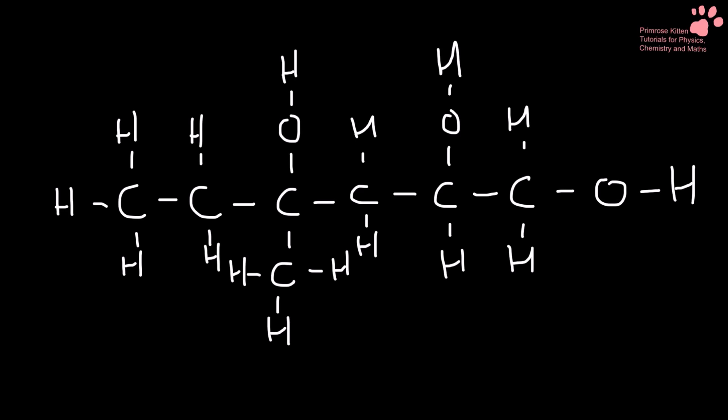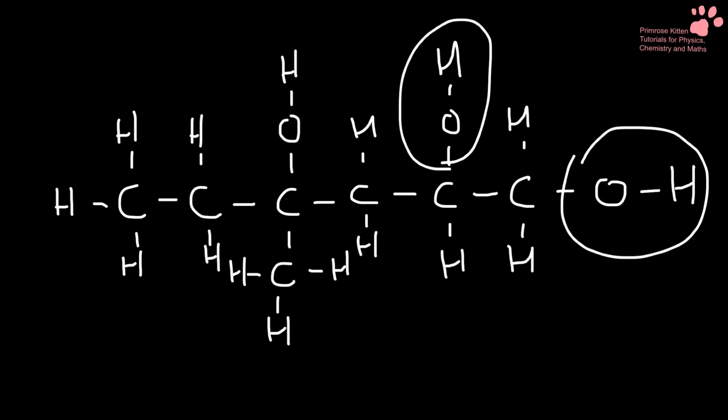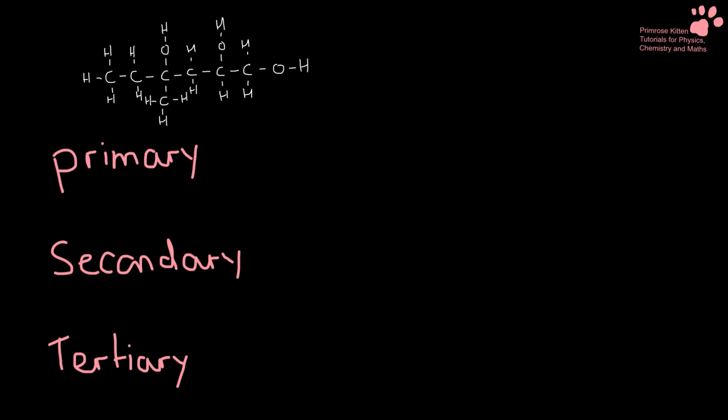Alcohol groups can go all over the place. They can go on the end, they can go in the middle, and right in the middle tucked in with lots of other different functional groups. We call these primary, secondary and tertiary alcohols. They react differently and you need to be able to identify them.